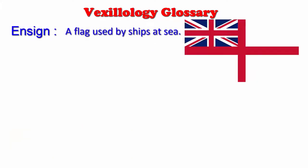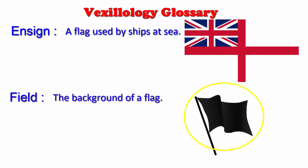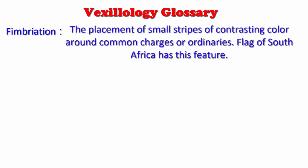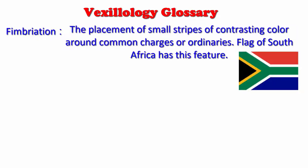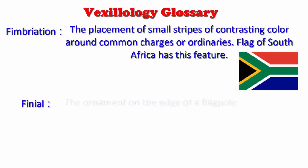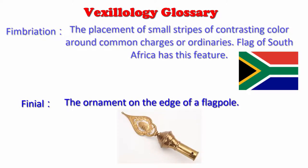Ensign: a flag used by ships at sea. Field: the background of a flag. Fimbriation: the placement of small stripes of contrasting color around common charges or ordinaries. The flag of South Africa has this feature. Finial: the ornament on the top edge of a flagpole.